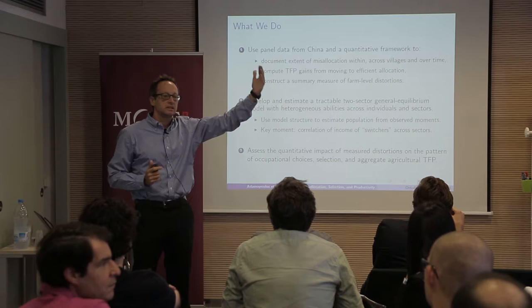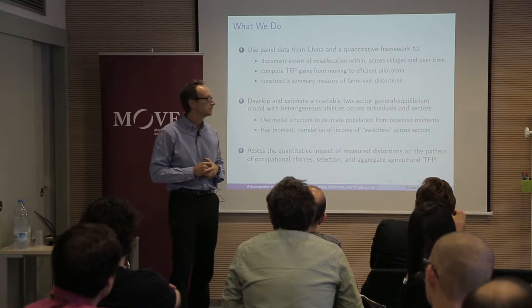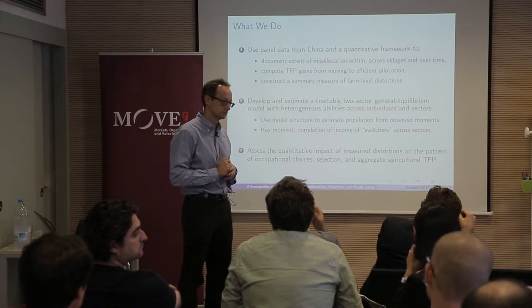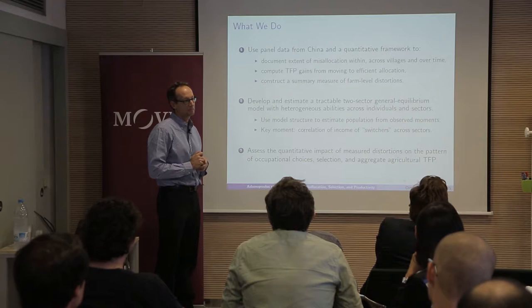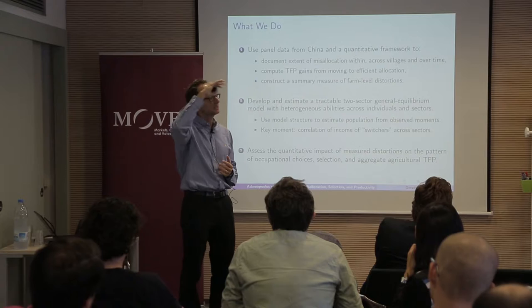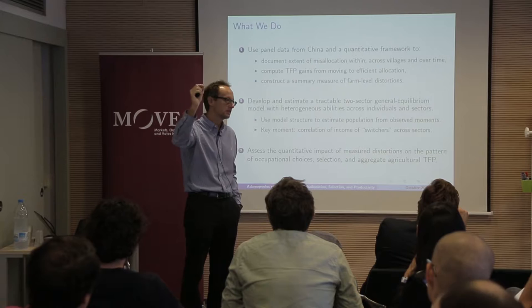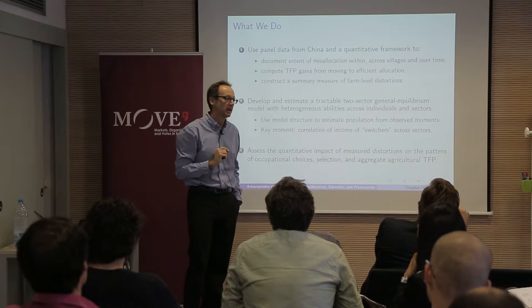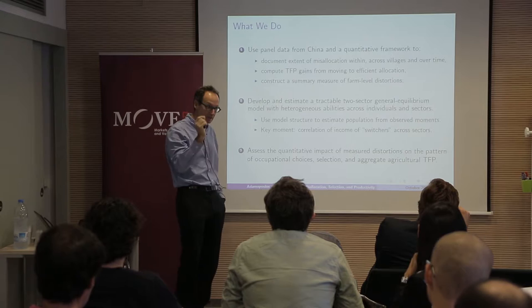Other countries that have similar growth experiences but don't have these institutions would have a smaller gap — for example Vietnam. The problem is that the gap also depends on labor market mobility barriers, which differ across countries. In general when you plot this gap against GDP per capita it's systematic, with some variation along the line. This gap is not unique to land market institutions — many things could drive low agricultural productivity.